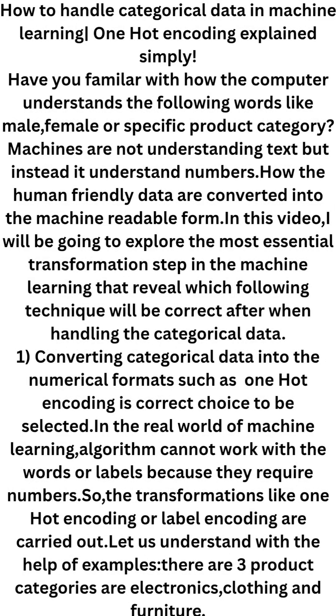How do you handle category data in machine learning? One hot encoding explained simply. Are you familiar with how the computer understands words like male, female, or specific product categories? Machines do not understand text, but instead they understand numbers. How is human-friendly data converted into machine-readable form?